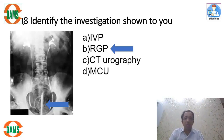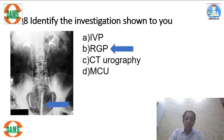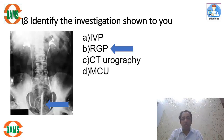This is a retrograde pyelogram — not done intravenously but retrogradely through cystoscopic catheters. The answer is RGP. Give more and more CBT tests; after every test you will learn what you are weak at and gradually become better in your approach.